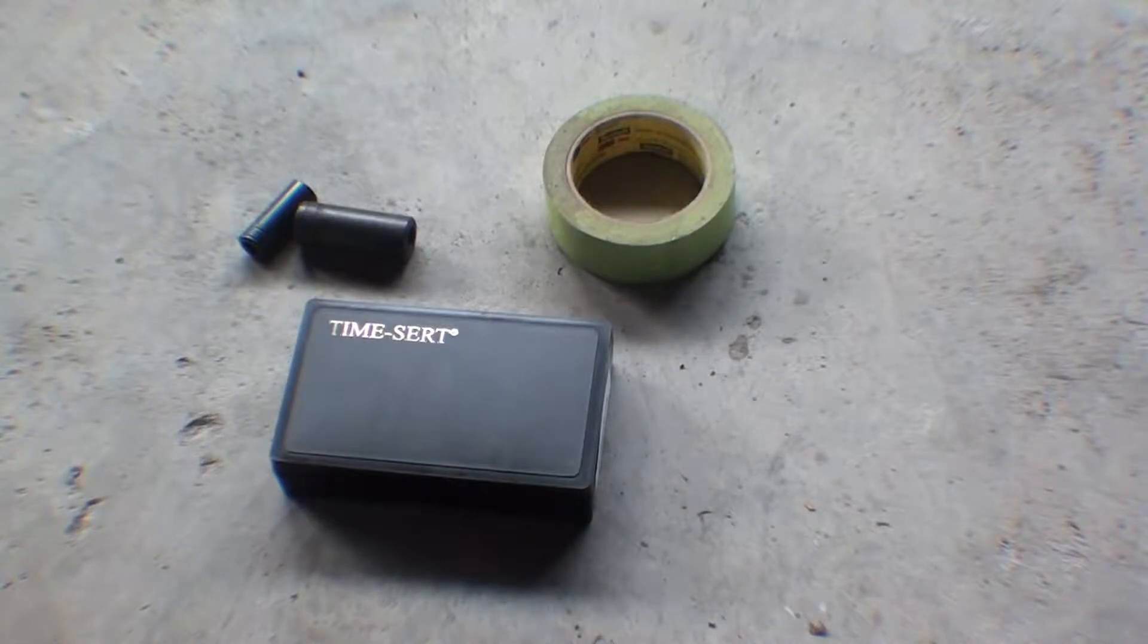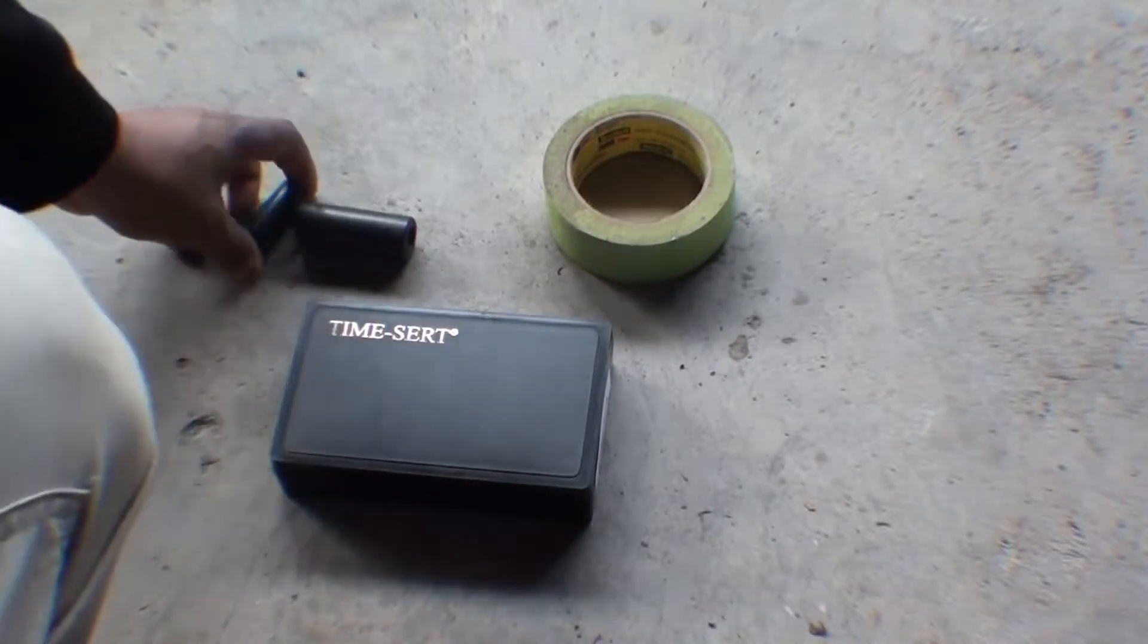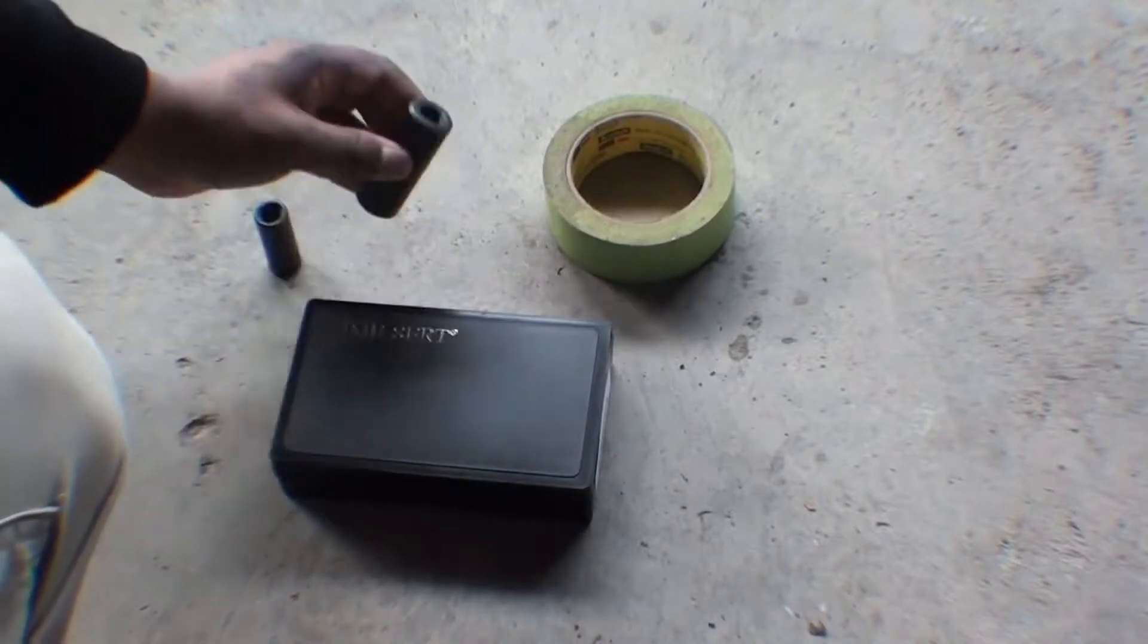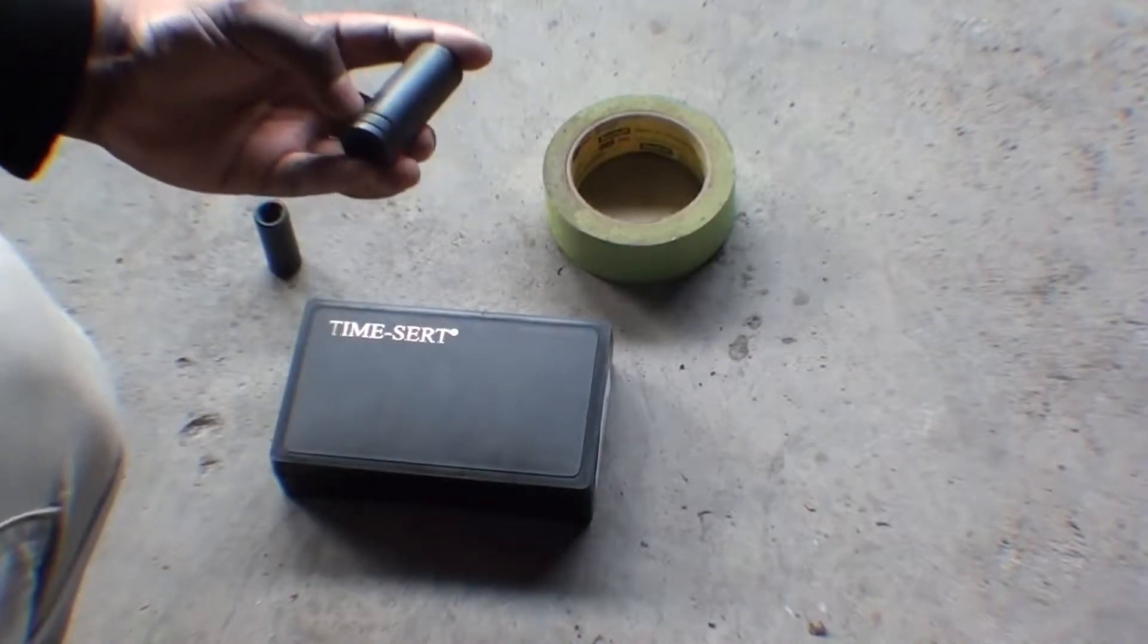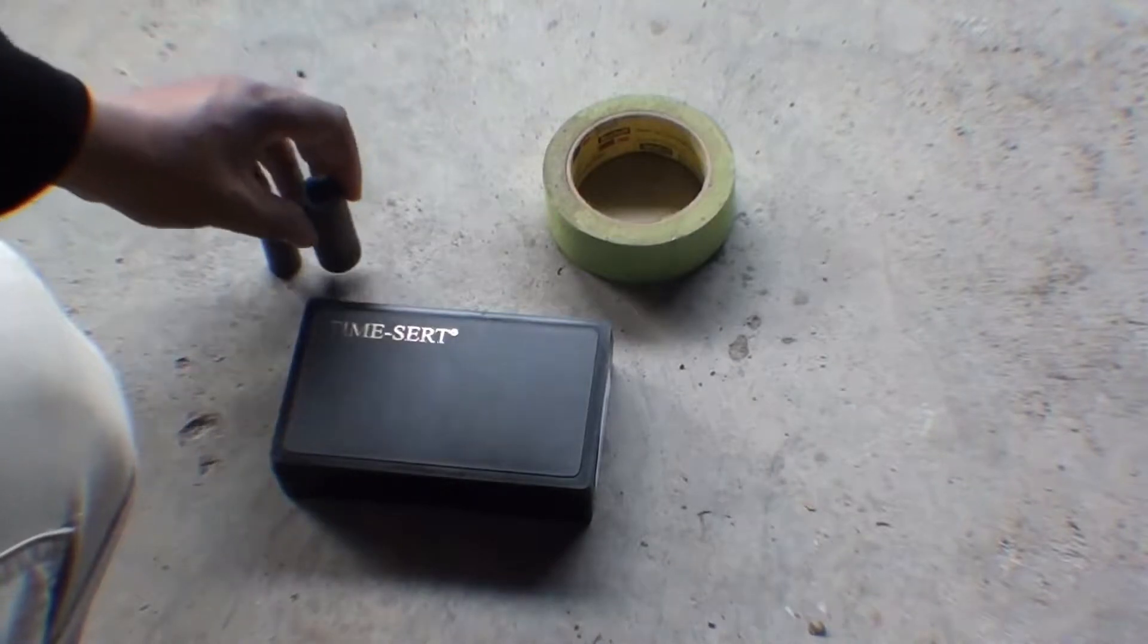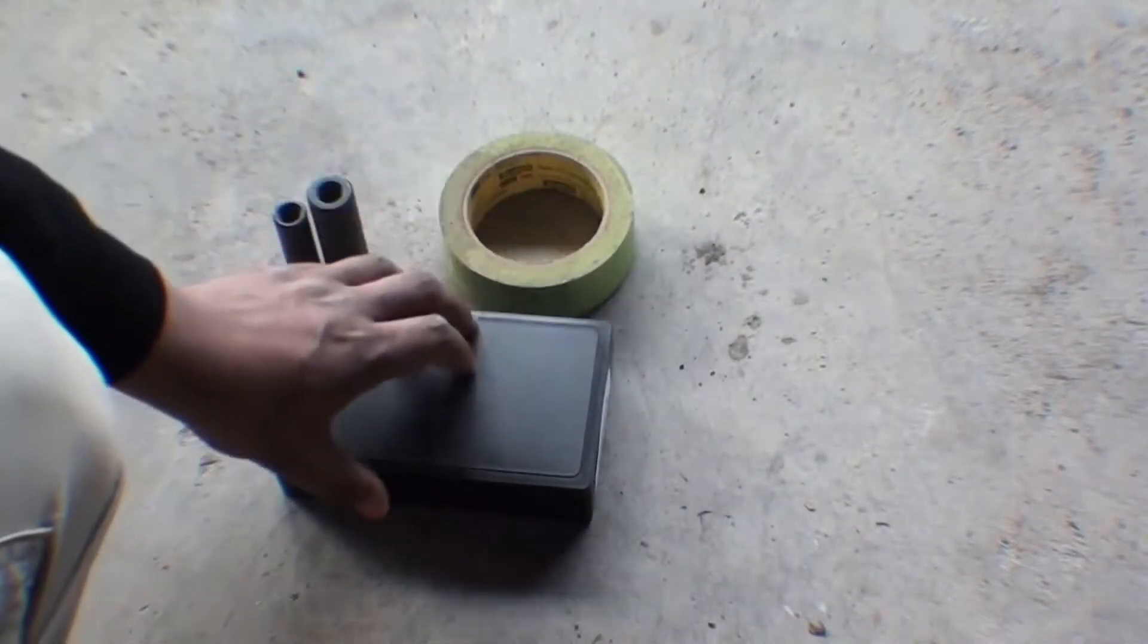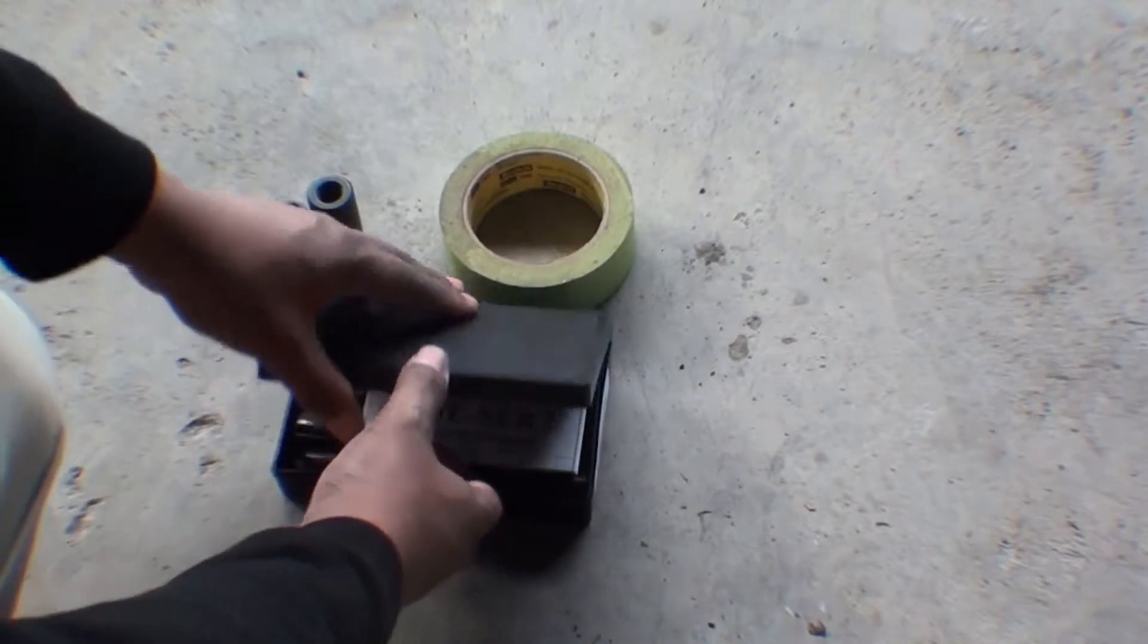Today we will be restoring threads on a Honda oil pan with the TimeCert Thread Repair Kit. Extra tools you will need are a number 8 tap socket, a number 9 tap socket, tape is optional for measuring drill and tap depth, and the TimeCert Kit.